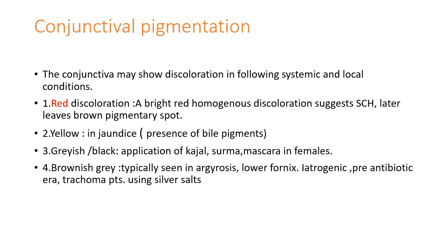Conjunctival pigmentation is another topic for short notes. Normal conjunctiva is a thin transparent structure. Red discoloration — bright red homogeneous — suggests subconjunctival hemorrhage. Yellow discoloration is seen in jaundice due to presence of bile pigments. Grayish or black discoloration is seen due to application of kajal, surma, or mascara. Brownish-gray discoloration is typically seen in argyrosis — at the lower fornix — in patients using silver salts in the pre-antibiotic era.